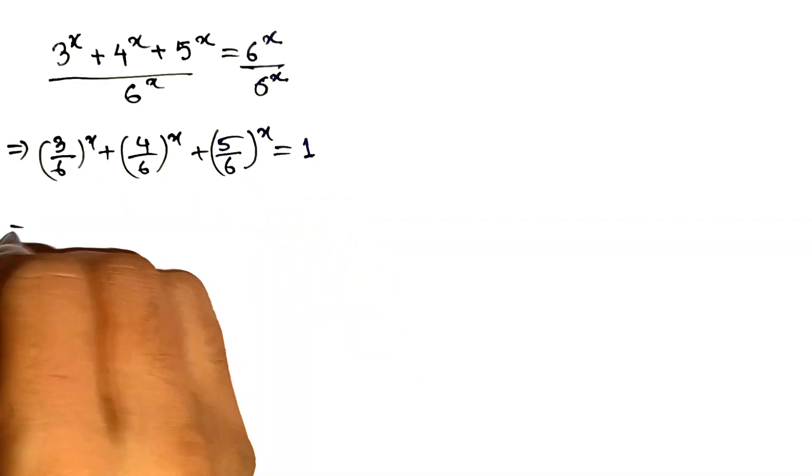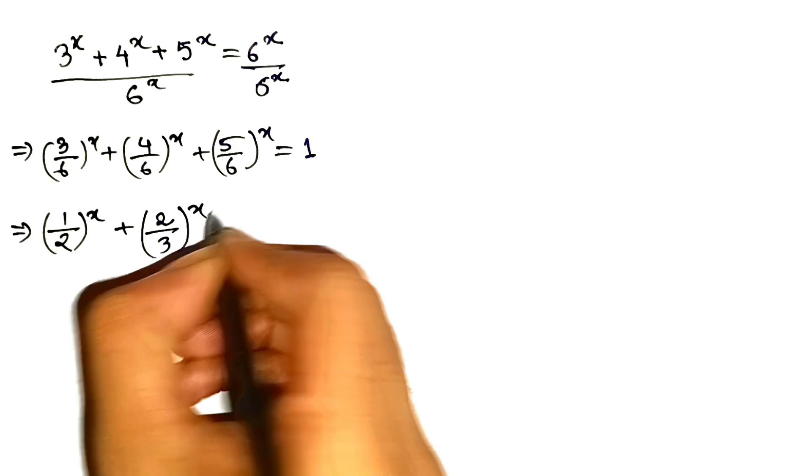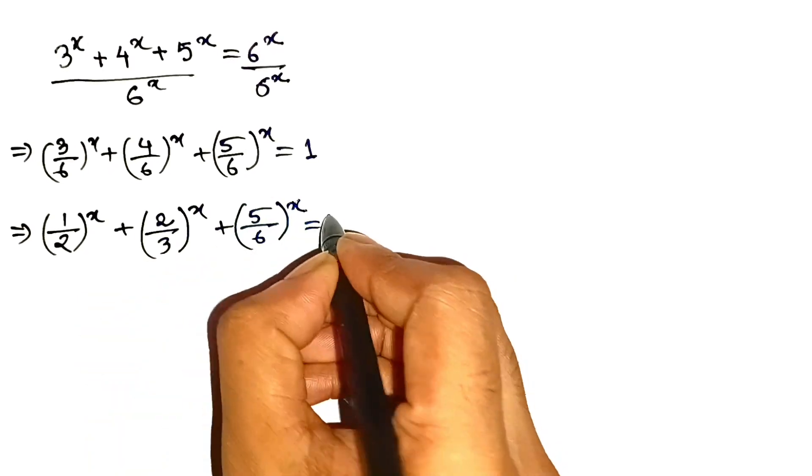Now let's simplify those fractions and we've got 1 half to the power of x plus 2 thirds to the power of x plus 5 sixths to the power of x equals 1.